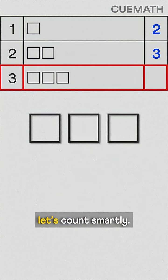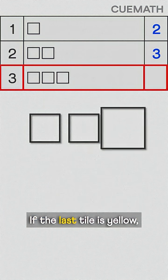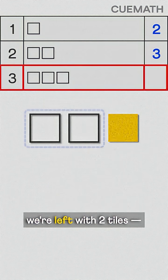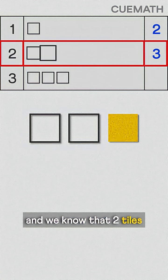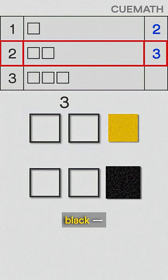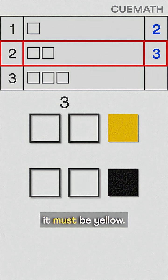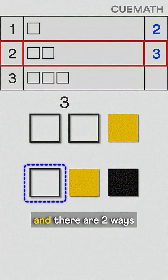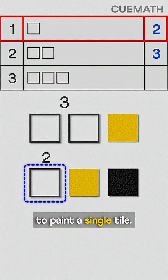Now for three tiles, let's count smartly. If the last tile is yellow, we're left with two tiles, and we know that two tiles can be painted in three ways. But if the last one is black, the tile before it must be yellow. That leaves just one tile, and there are two ways to paint a single tile.